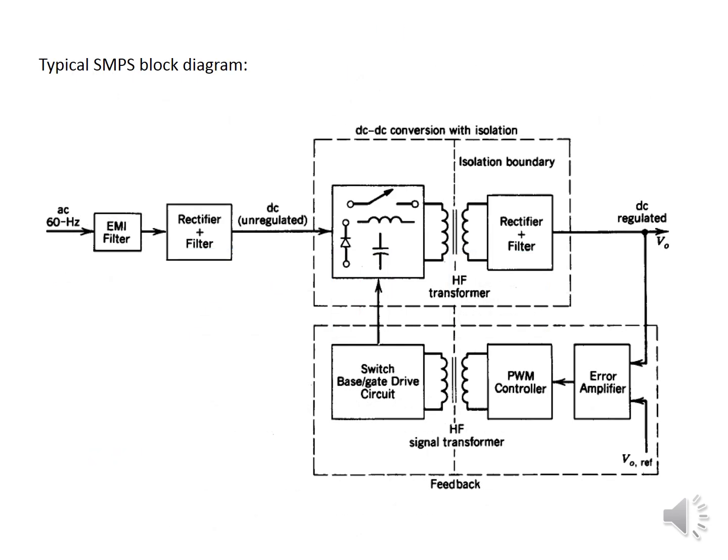You can see the typical SMPS block diagram. The AC input supply at 60 Hz is given to an EMI filter, then to a rectifier plus filter, which converts it to DC and removes ripples. This unregulated DC supply is given to a DC-DC conversion block with isolation, which contains a high-frequency transformer providing isolation between input and output. Then it goes to a rectifier plus filter, and then to a PWM controller with an error amplifier and switch.